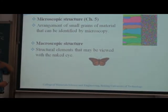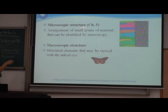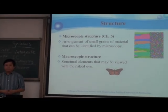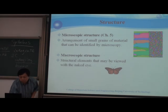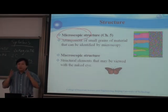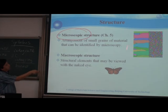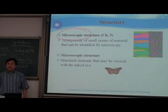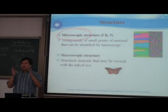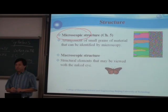Then we have to look at the material at the microscopic level — that is, looking at the structure at higher magnification under a microscope. Under the microscope, we can see the arrangement of small grains of the material, identified by different colors and shades. This microstructure level is bigger than the atomic level. Going even further, we reach the macroscopic level, where structures are large enough to be seen with the naked eye.